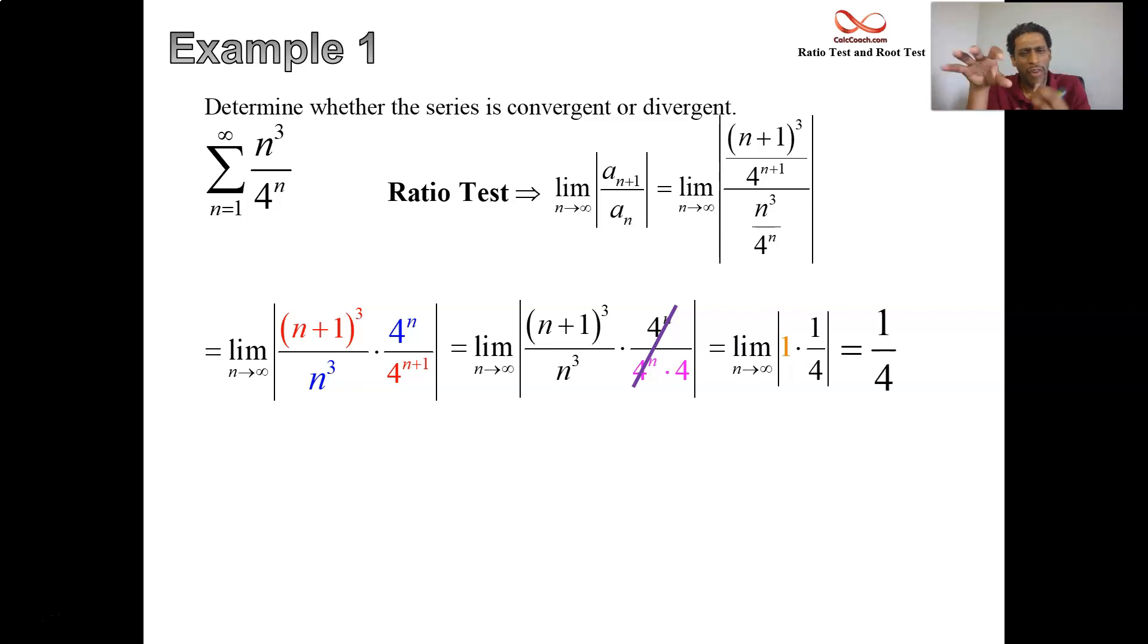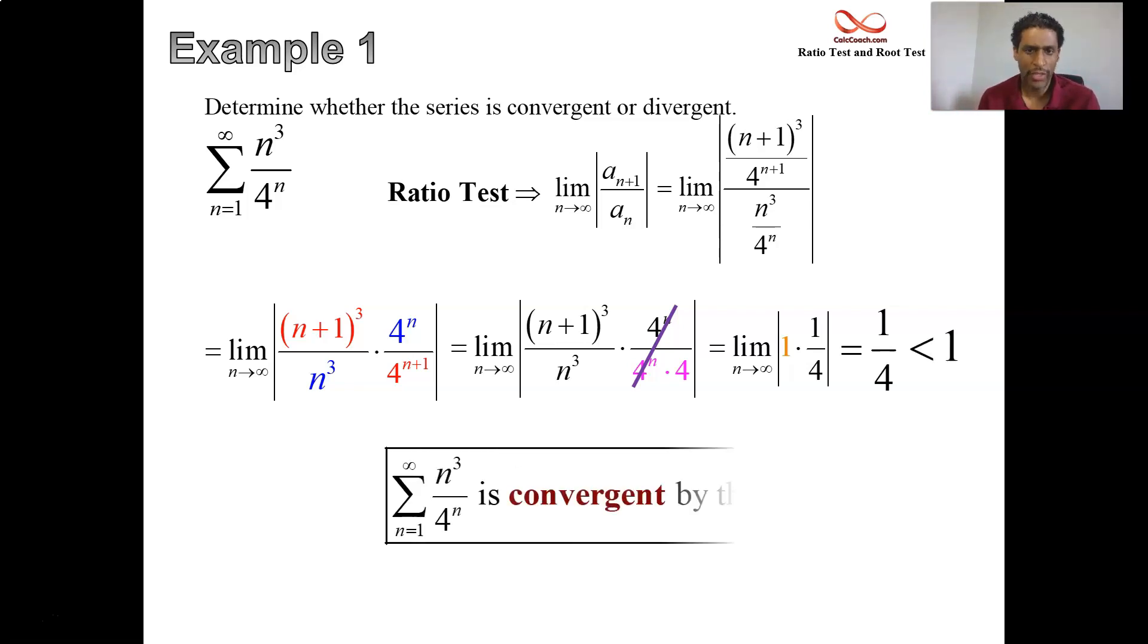This means that when you divide successive terms, you'll get basically the ratio of one-fourth. And the ratio test says, well, when this ratio is less than 1, dividing a sub 100 by a sub 99, you should get a fourth. The ratio test says that that means that the series will converge. This is less than 1, and so the series will converge.